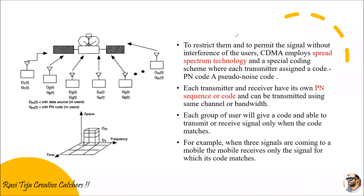This is how Code Division Multiple Access uses spread spectrum technology and the concept of PN code — pseudo noise code. Each and every user is allotted a particular code for the transmission and reception of the signal with respect to the satellite. Only when codes match will the communication be successful; if the codes don't match, the communication will not be successful.